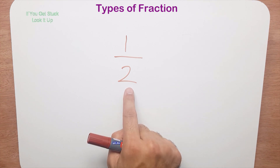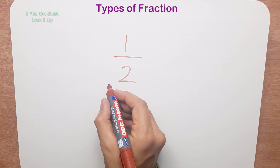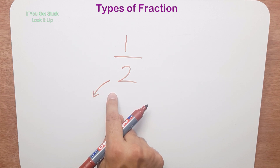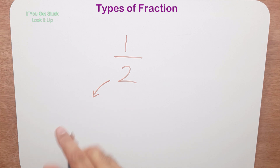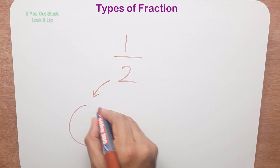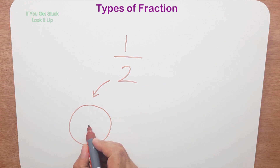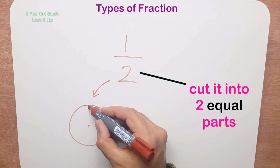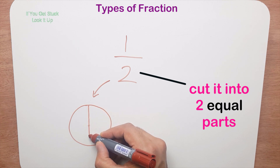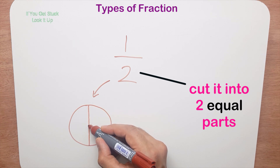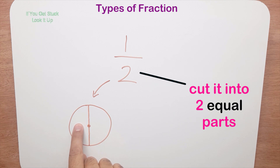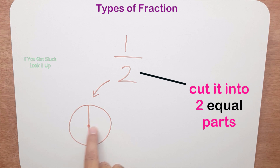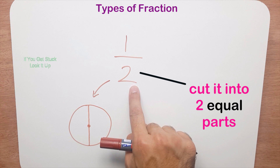Now if you had to draw this, I like to use the pizza model. I draw a circle — a pizza — and put a dot in the middle, and I'm going to cut this pizza into two equal parts, straight down the middle. This piece is equal to this piece; they're both the same size. So you have one, two pieces, and that's where that two comes from.